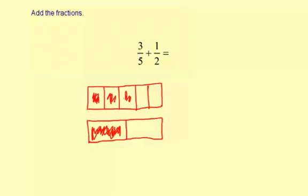So with 5 and 2, we need to find the least common multiple. And since they're both prime numbers, it's going to be 5 times 2, which is 10. So we need to divide into tenths.